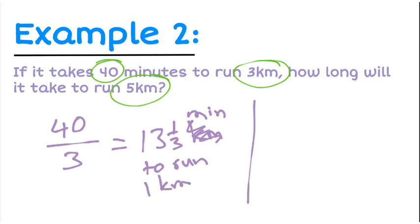Now to do 5 kilometers, we take 13 and 1/3 times 5, which gives us 66.7 minutes.